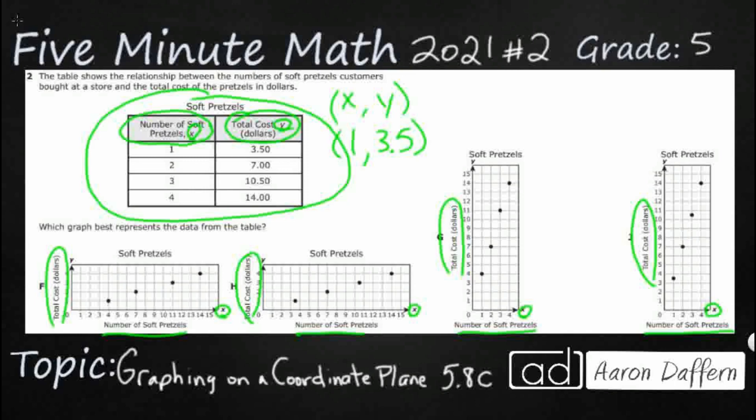Look at F right here. F is already incorrect, because they've got a number of soft pretzels as 4, and then they've got total cost at 1. So this first one is 4, 1. So I'm not sure even where that's coming from. So that's incorrect.